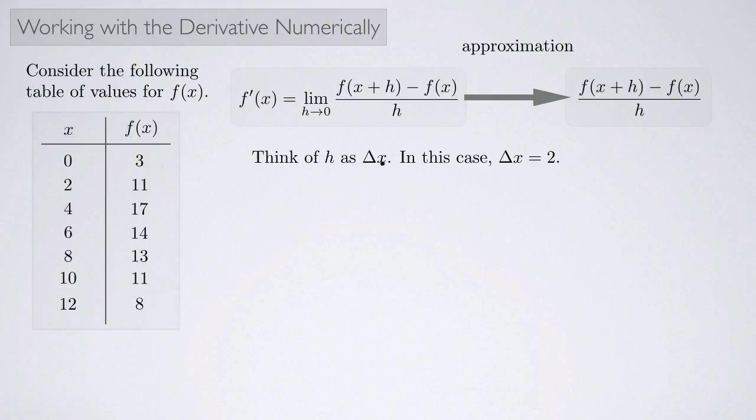If we look at the column of x here, it's going up by two each time: 0, 2, 4, 6, 8, 10, 12. In this case we're going to think of Δx as being 2. If it went up by three each time, Δx would be 3, and if it went up by a different amount each time, then our Δx would change each time we did a computation.